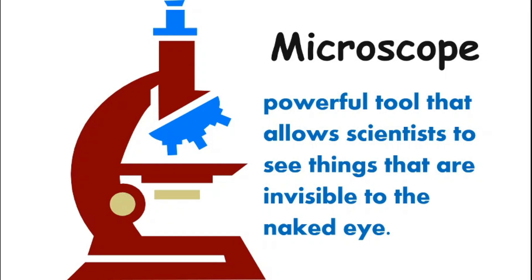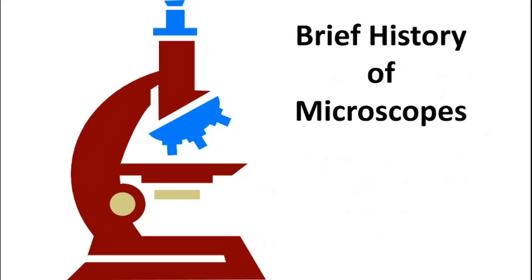So what is a microscope? The microscope is a powerful tool that allows scientists to see things that are invisible to the naked eye. Scientists have used microscopes to observe the smallest parts of our cells and to analyze materials in microscopic worlds. However, different types of microscopes are needed based on various organisms and their settings. Let us have a brief history of the microscope.